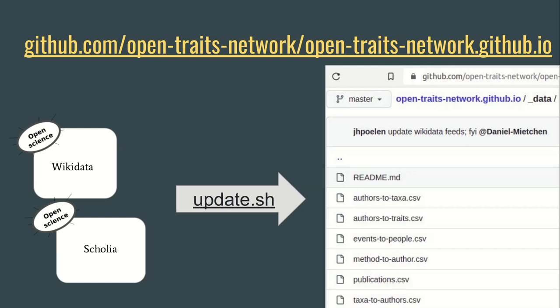Now we're looking at how to practically implement this — this is largely the work of Jorrit. The Open Trades Network has a website implemented on GitHub Pages, and being a static site, it feeds off of static data. We've built a small pipeline that can pull data from Wikidata — which is essentially dynamic — and saves a snapshot of that data in a format that the Open Trades Network website can process. That data is then visualized as part of the Open Trades Network website, and some of the visualizations are inspired directly from Scholia.